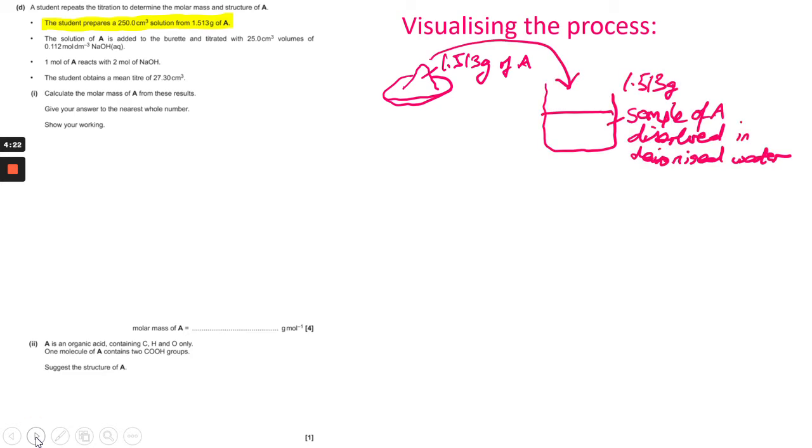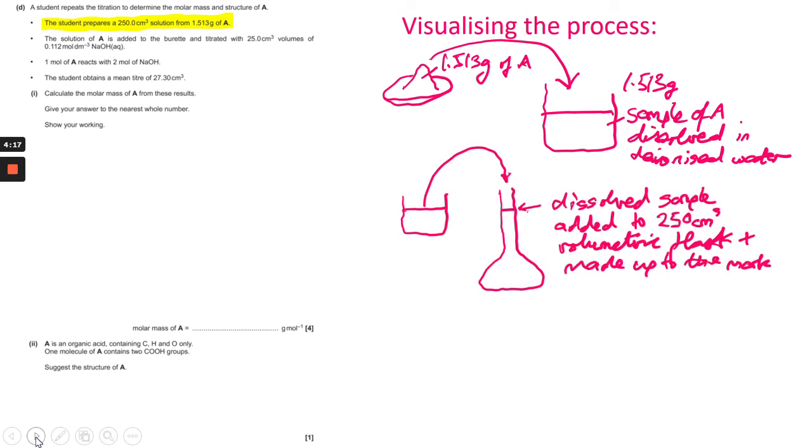The student prepares a 250 centimeter cubed solution from 1.513 grams of A. So you imagine that you've got a solid, 1.513 grams of A, and that's dissolved in deionized water. The exact amount of water isn't important because then that is transferred into a volumetric flask and made up to the mark with deionized water again.